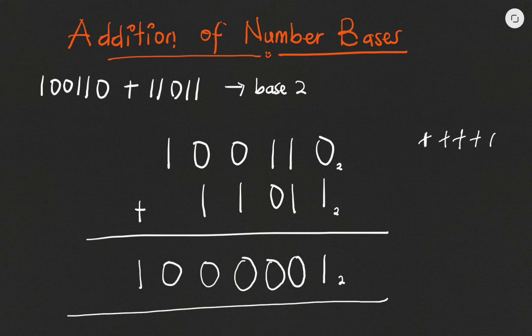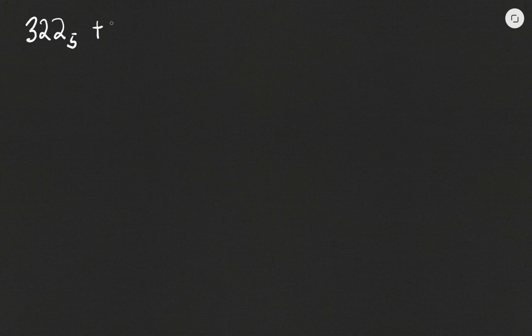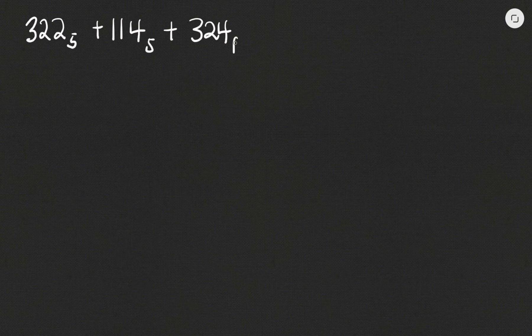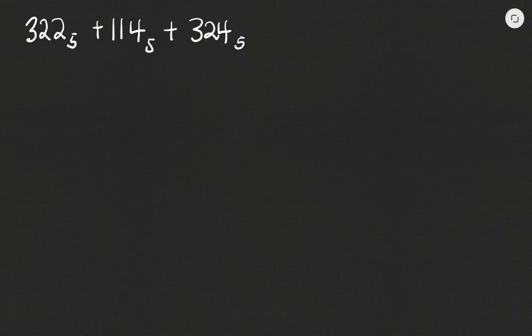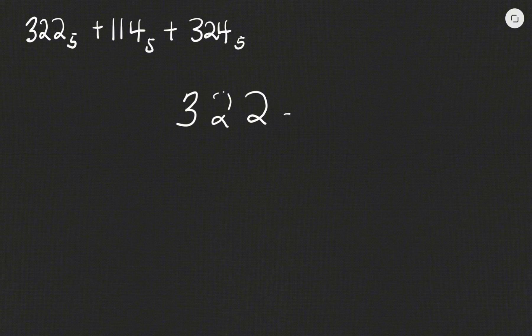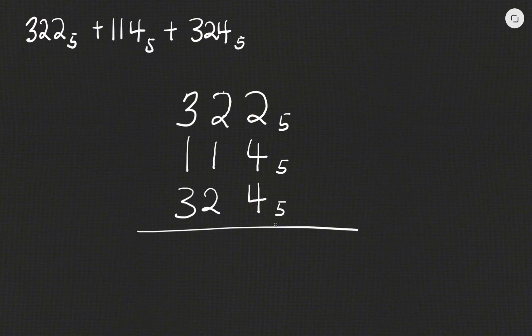Let's proceed to look at another example so that we further understand how to add in number bases. This time around we have to add the following numbers: 322 base five, with 114 base five, and 324 base five. We are dealing with base five here, which means that when we add, we shouldn't have any number that exceeds five in our results.